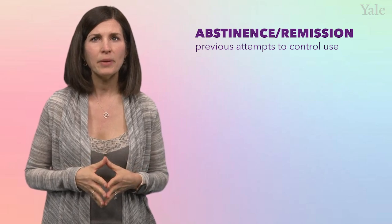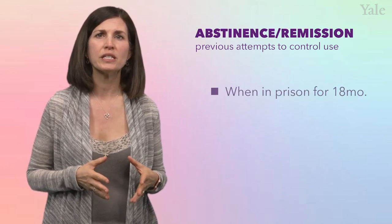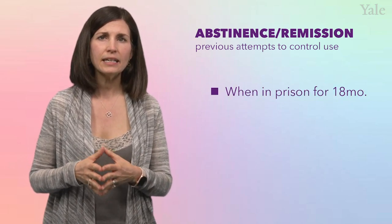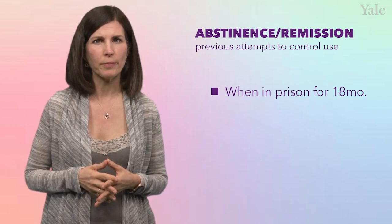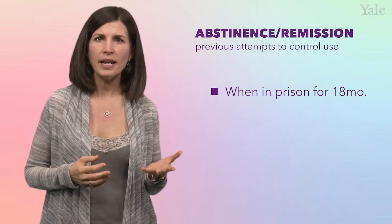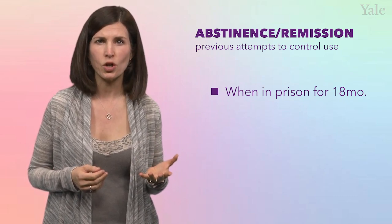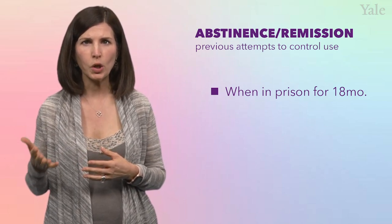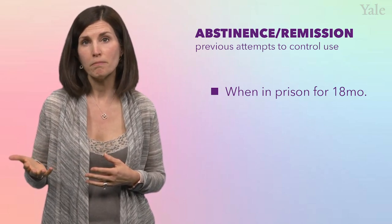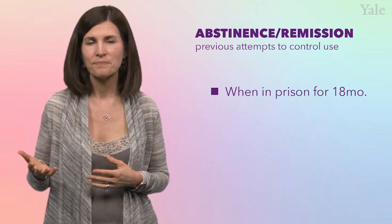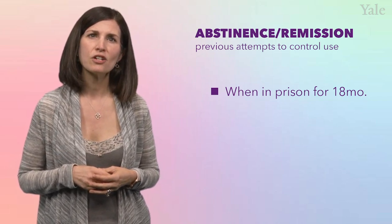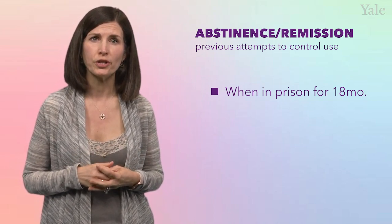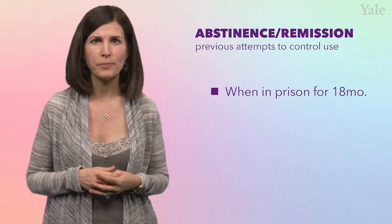Beyond attempts at treatment, have there been any attempts at abstinence or periods of remission? Understanding why and when someone has attempted abstinence gives you more insight into what has motivated their attempt at quitting, and what might have helped or hindered abstinence in the past. When asked, Annabeth tells you that she was abstinent when she was in prison, for about 18 months. These legal consequences tell you much more about her situation — it probably makes it harder for her to find work, but coordinating with a probation officer might be leveraged for care. Additionally, Annabeth shares that the structure of the controlled environment was helpful to her, and you can factor that into treatment options.